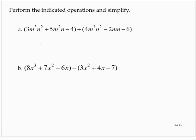So if we have addition, we just need to combine like terms. I have an m cubed n squared term and an m cubed n squared term. Let's combine them. 7m cubed n squared.